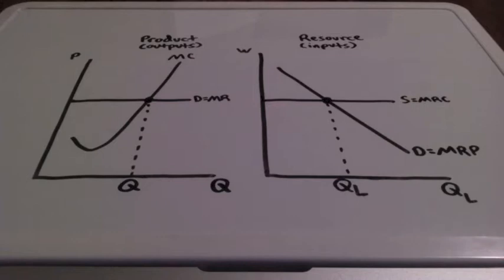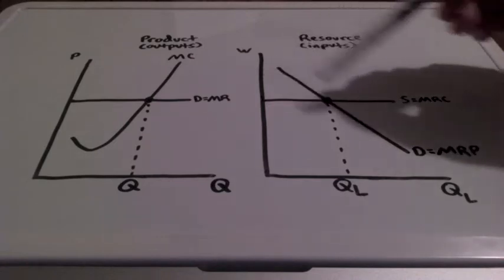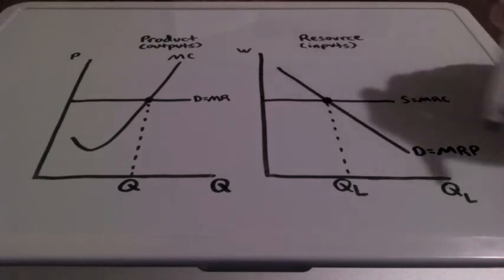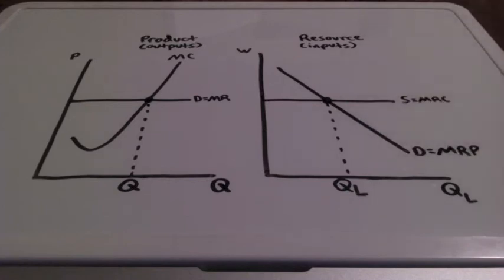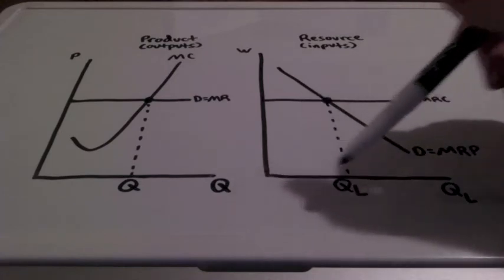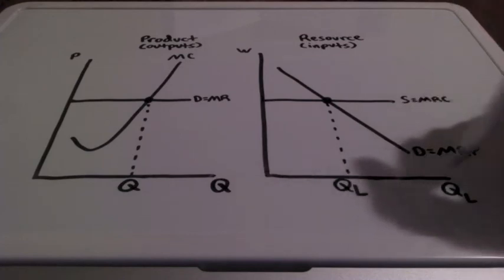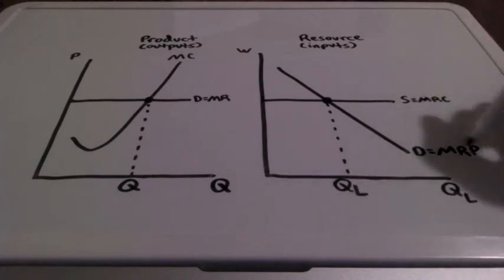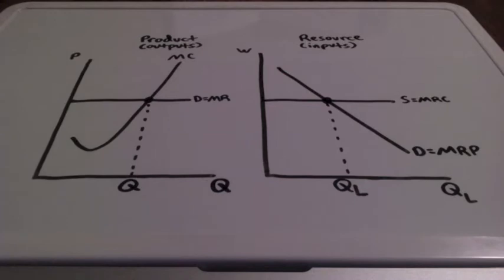In the resource market, we have the demand curve, which is going to be downward sloping. The demand for labor is downward sloping because each additional worker — each additional quantity of labor — generates less and less additional revenue. This is going to equal what we call the MRP, or marginal revenue product, which is the additional revenue generated by each additional input.